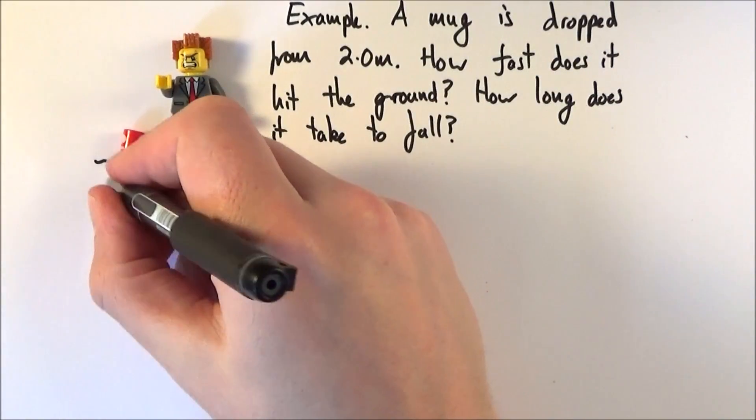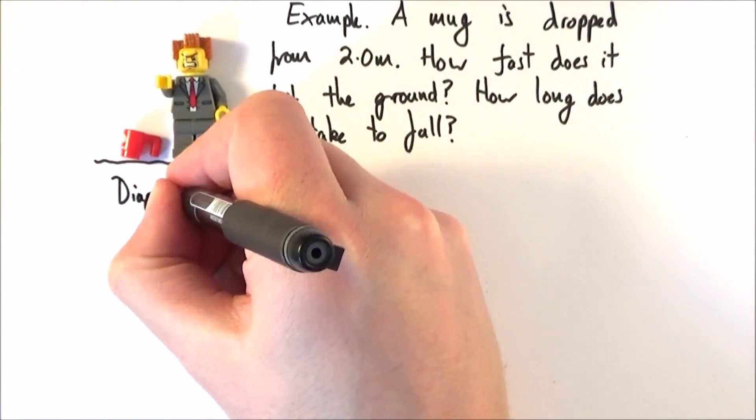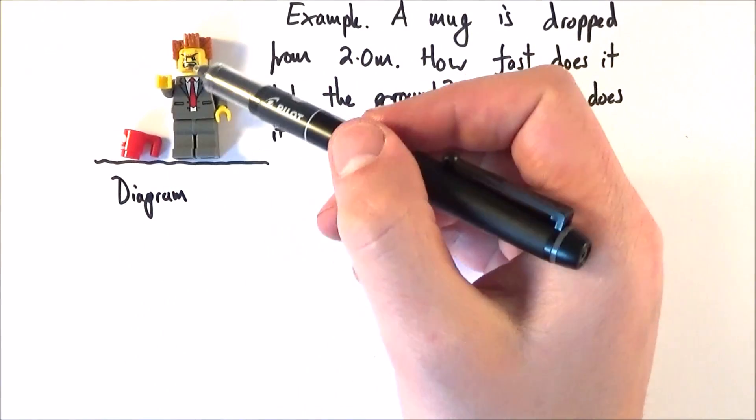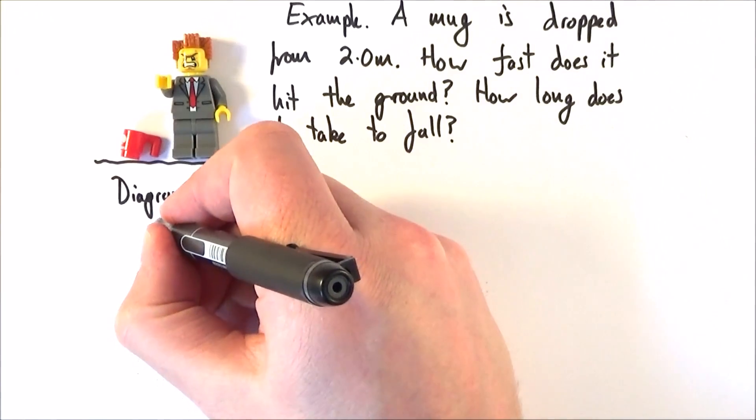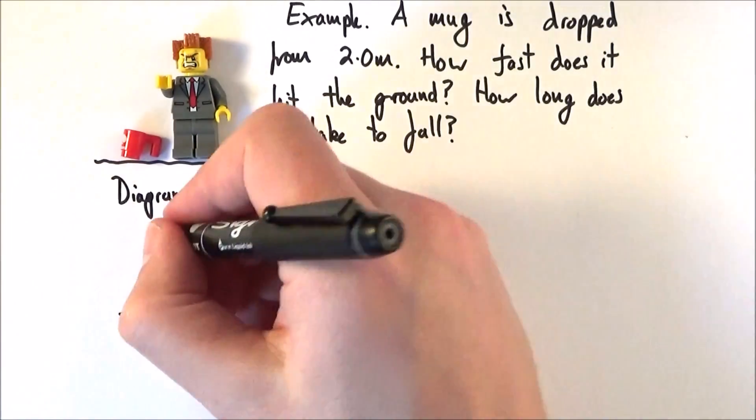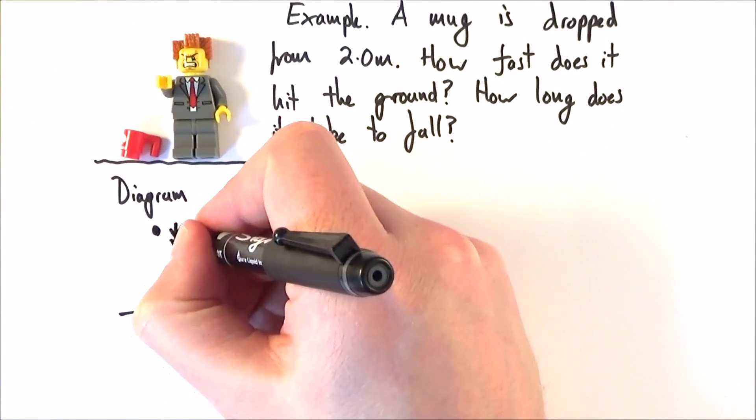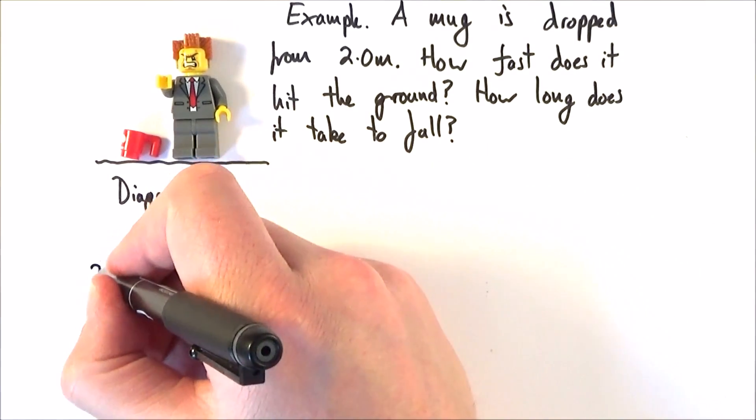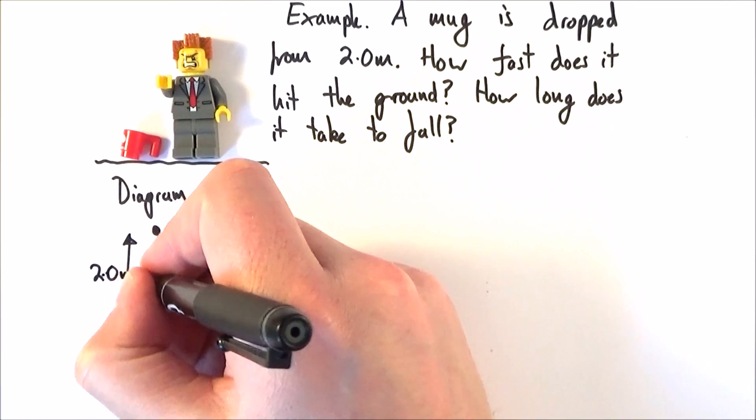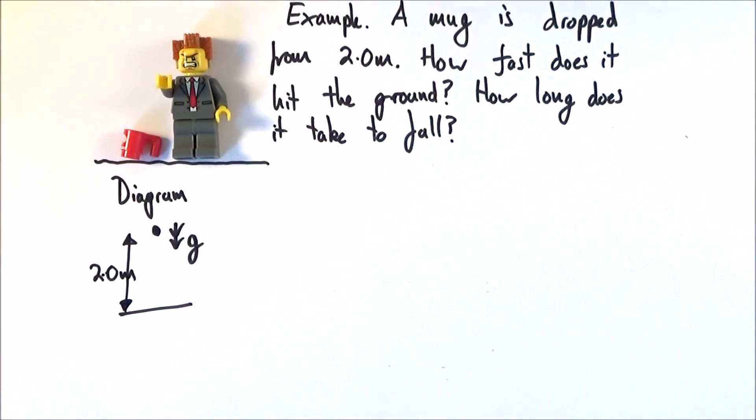So first of all, a diagram. And all I'm going to do is take this kind of real-world situation and simplify it as much as possible. So here we have ground level. Here we have the mug represented by a dot. And what it does is it falls under gravity and it falls a distance of two meters. So that's the first thing that we need to know.